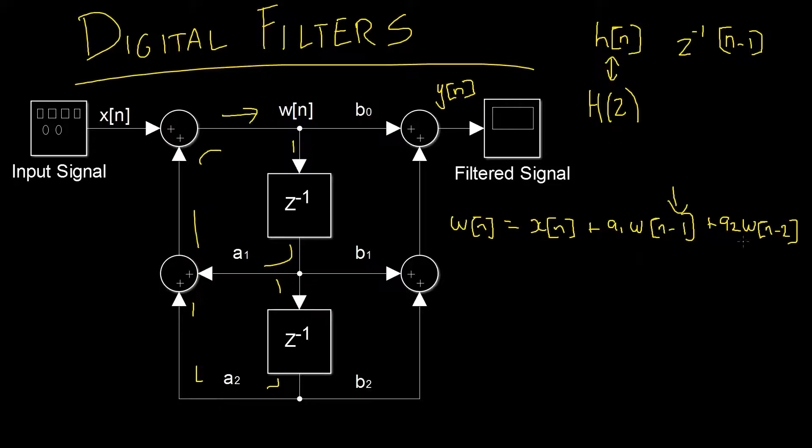Now let's take a similar approach to calculate y of n. First, we know y of n is equal to w of n which is entering this node here and scaled by b0. Then we also have the delay scaled by b1, and then we also have the double delay scaled by b2. Just like before, we'll write that again.